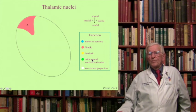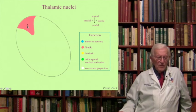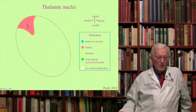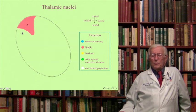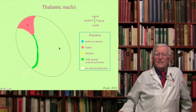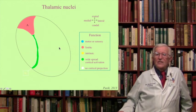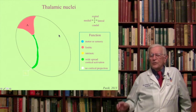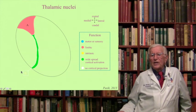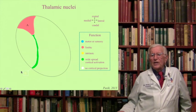At the rostral pole of the thalamus is a nuclear group called the anterior group, which is of limbic nature. The anterior group receives the mammothalamic bundle and is part of Papez's circuit, projecting to the cingulate gyrus. The rest of the thalamus is divided by a lamina of white matter separating the anterior nucleus from the medial and lateral groups. This bundle of myelinated fibers contains neurons within it — these are called the intralaminar nuclei, located within the medial lamina.